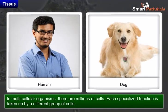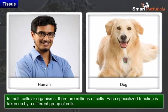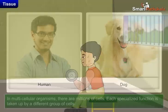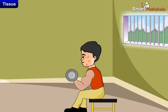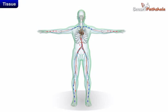But in multicellular organisms there are millions of cells. Each specialized function is taken up by a different group of cells. For example, in human beings, muscle cells contract and relax to cause movement, nerve cells carry messages, blood flows to transport oxygen, food, hormones and waste materials, and these different activities are performed by different groups of cells.